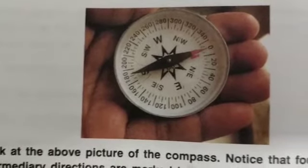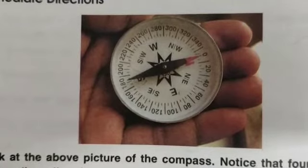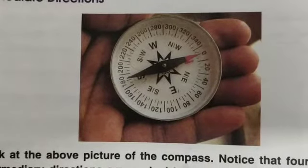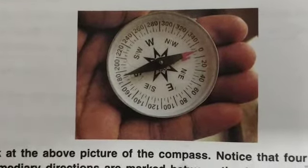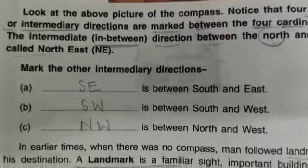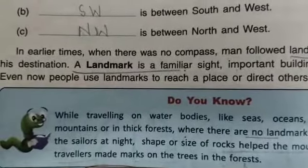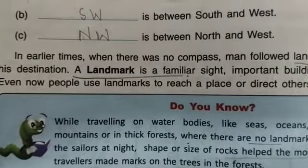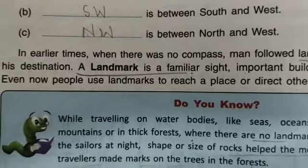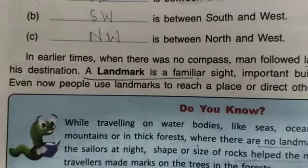There are four intermediate directions: Northeast (NE), Southeast (SE), Southwest (SW), and Northwest (NW). In earlier times when there was no compass, people followed landmarks to reach their destination. Landmarks are used even now to reach a place and direct others.